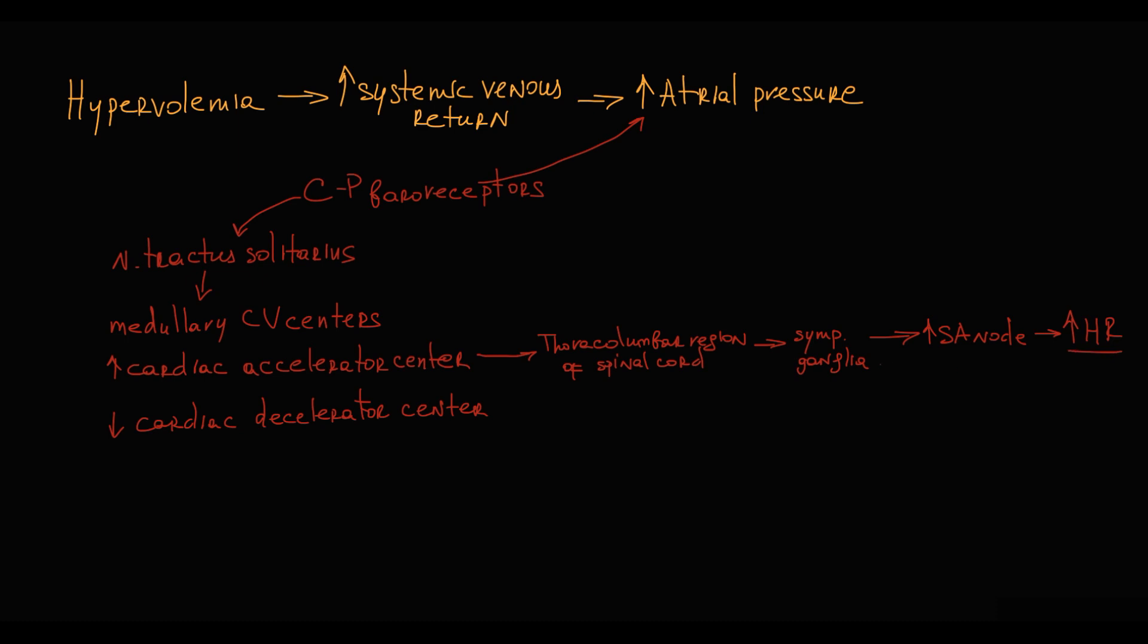By inhibition of cardiac decelerator center, it inhibits vagus nerve activity, and this prevents decrease in heart rate. So the final effect of Bainbridge reflex is increase in heart rate.